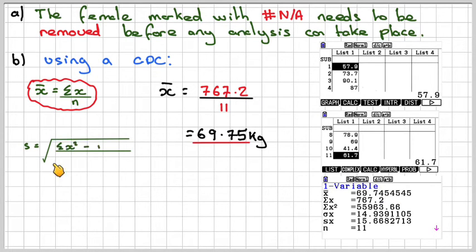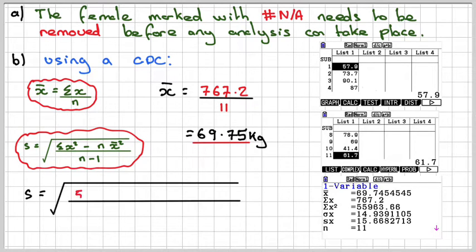And then the standard deviation formula is this one here: sigma x squared minus n times the mean squared over n minus 1. Take the square root of all of that. And therefore, in this case, the numbers will be got here from the calculator minus 11 times the mean squared. Don't round off. Over 11 minus 1.